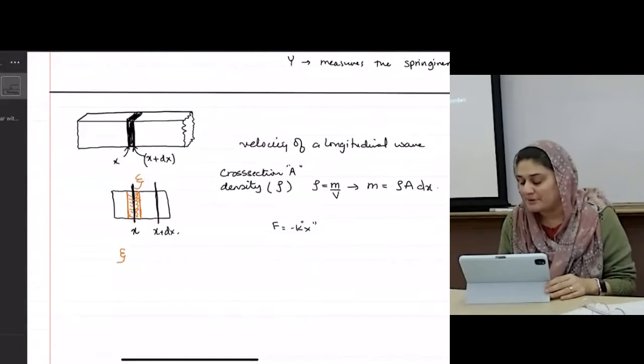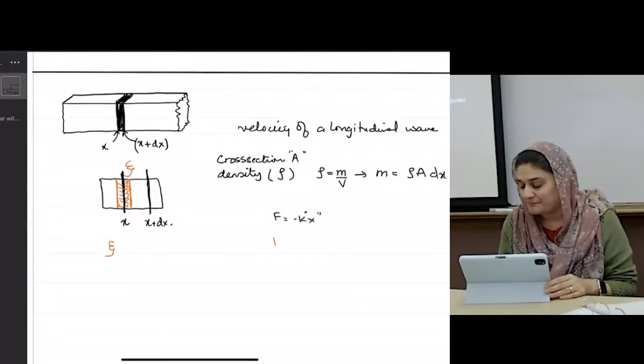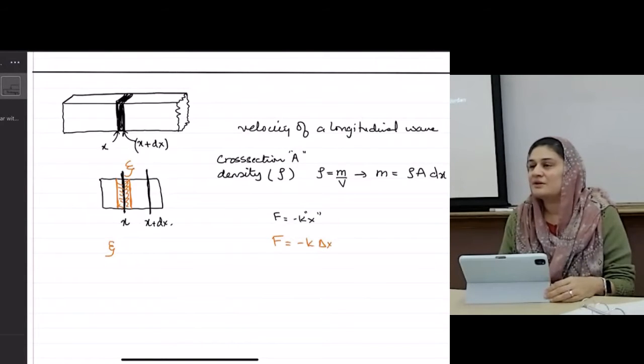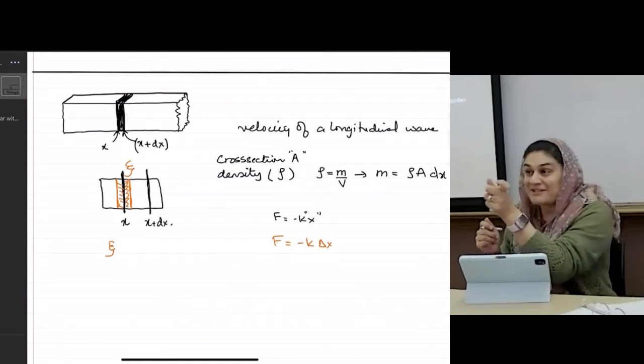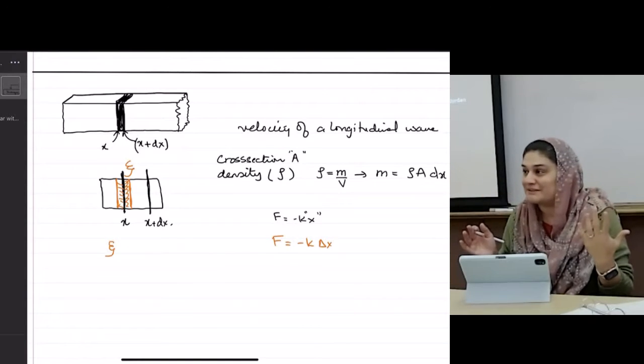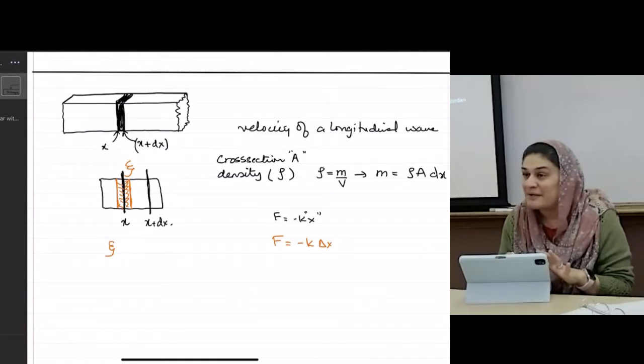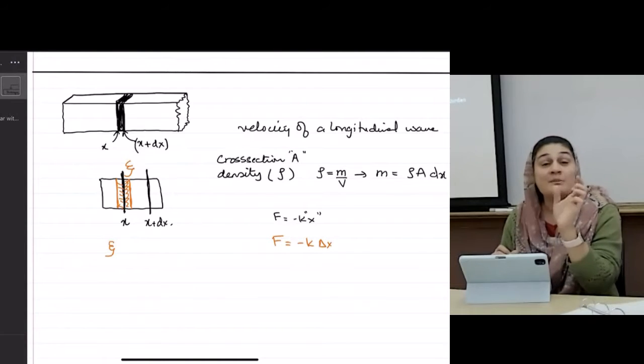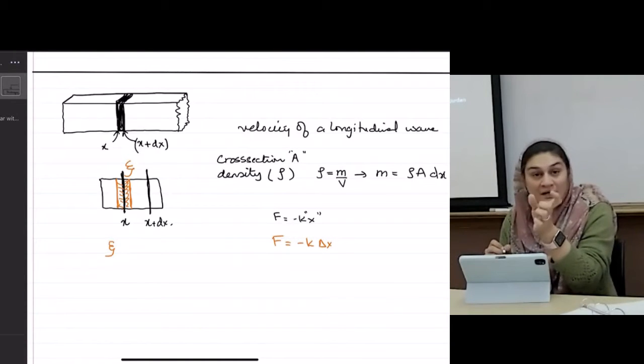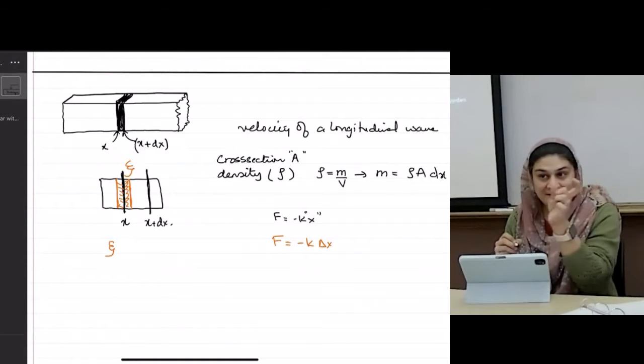So when you're talking about Hooke's law, do you put it as f equals minus k delta x? Because you understand that that's the small x that we're talking about, right? We don't have to put the delta there. It's the same thing. That's my epsilon. It's my small change, but the small change in the area of it, right? As it goes through.